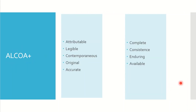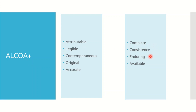So what does ALCOA mean? It means Attributable, Legible, Contemporaneous, Original, Accurate — and the 'Plus' denotes Complete, Consistent, Enduring, and Available.